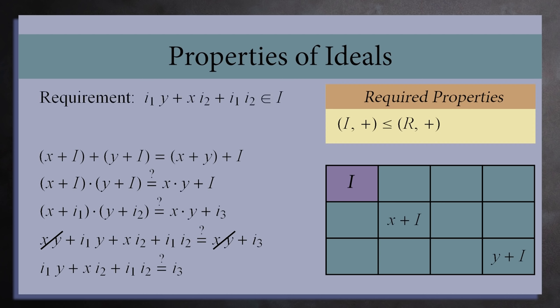In other words, no matter which two elements we pick from the cosets, the expression on the left-hand side should always be an element of I. But it's not clear why this should be true. However, there's a small trick we can use to find out when this does happen.